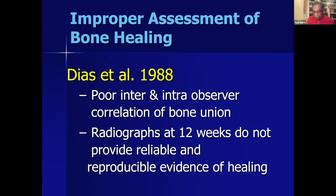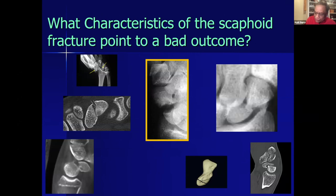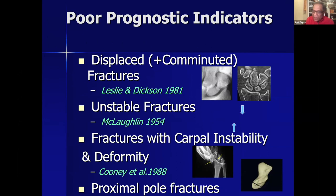What are the characteristics of the scaphoid fracture itself? There are several: displaced fracture and comminuted fracture, known since Leslie and Dickinson's classic 1981 study; unstable fractures with different patterns that can separate; fractures with carpal instability and deformity; and proximal pole fractures. These four characteristics need to be identified, and correspondingly, these are the indications for primary ORIF or CRIF.